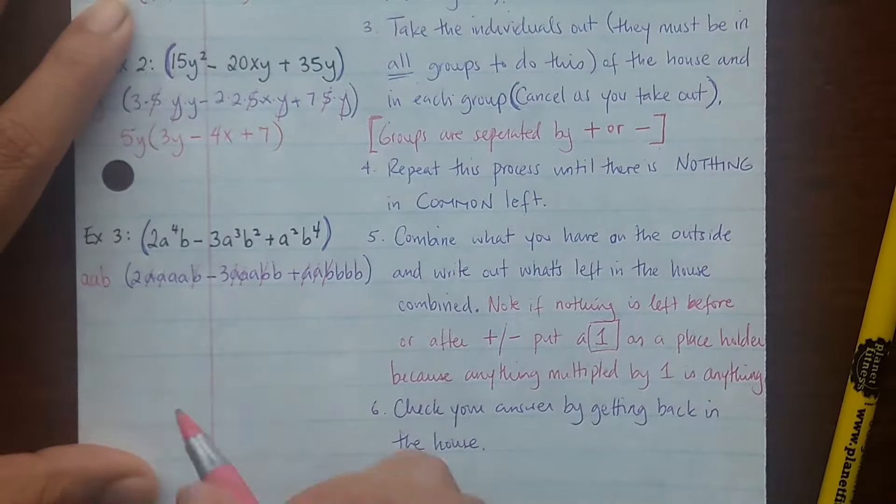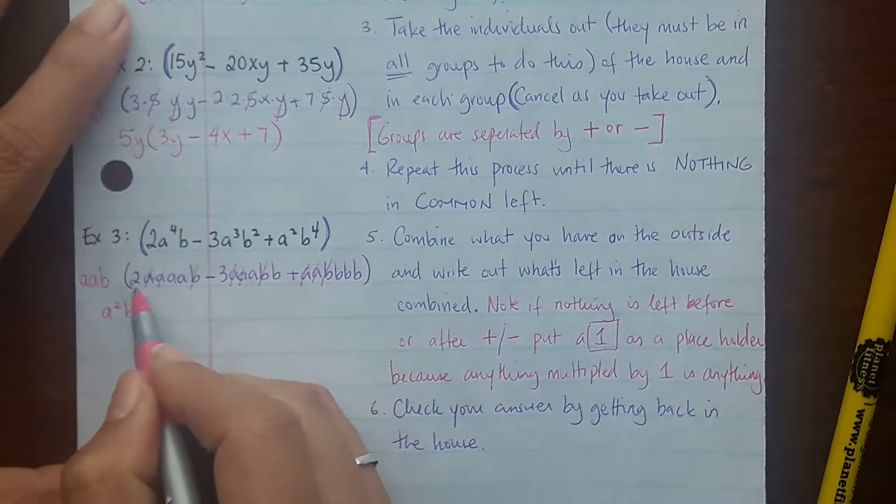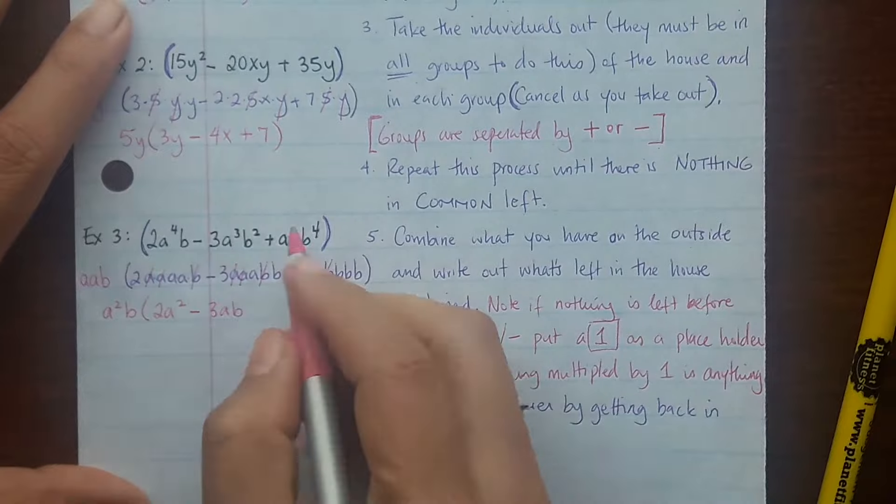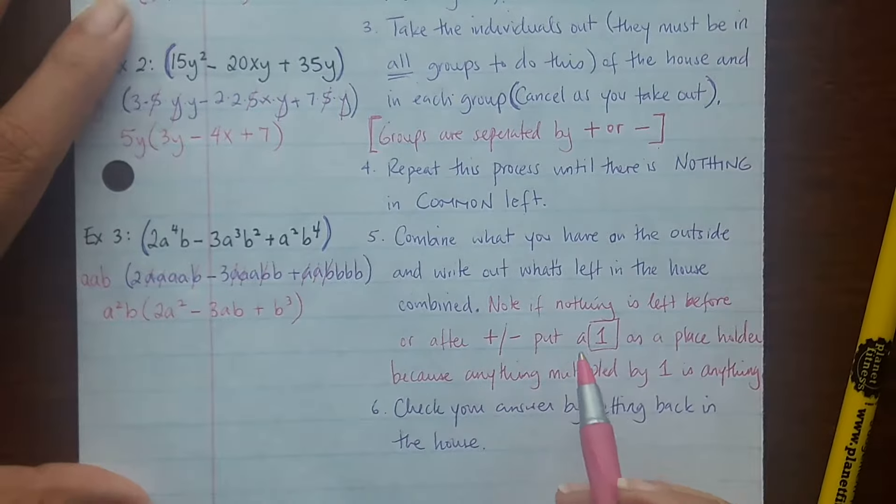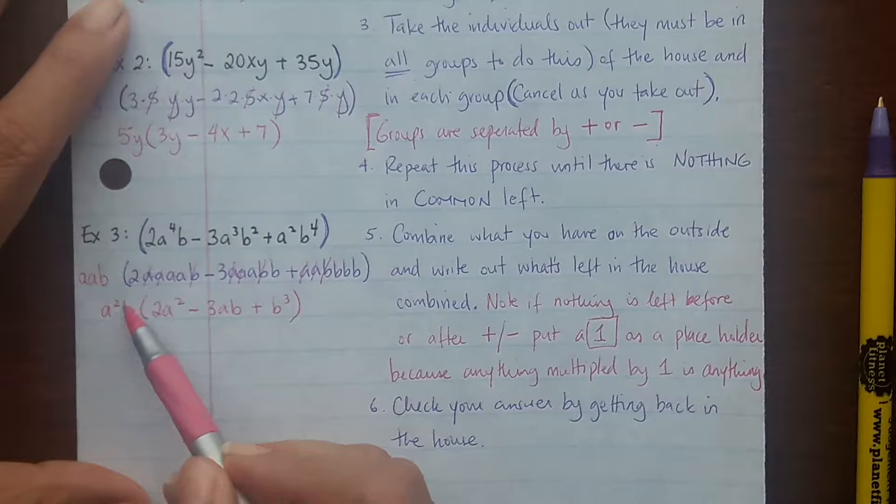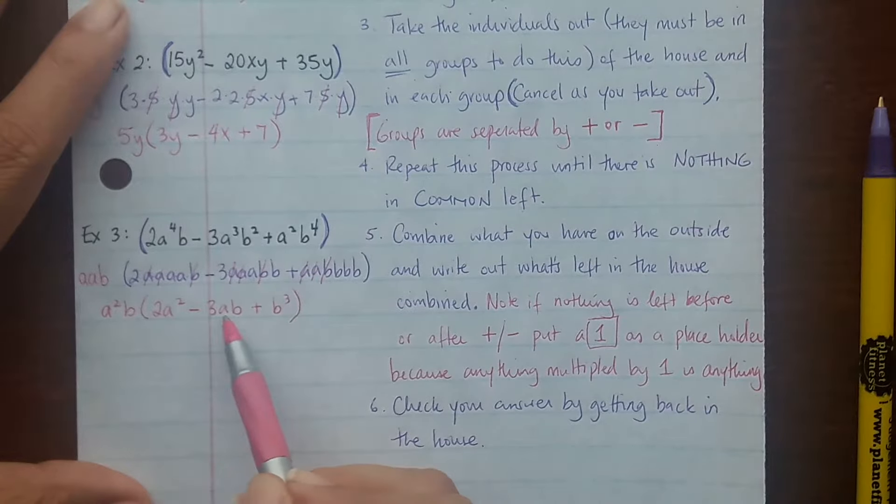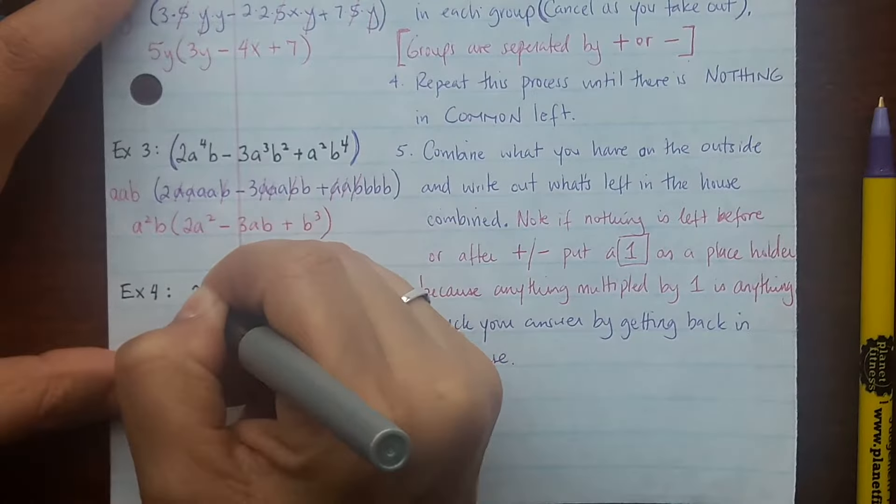So then now you need to combine the outside. So that's 2 a's on the outside and a b. And then we have 2a² - 3ab + 3b³. Alright, check your answer by getting back in the house. So when you multiply it back out you get the original problem. Yes I do. The listening check: circle Example 3.